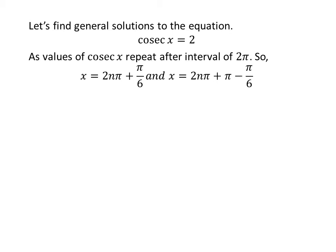Let us find the general solutions. As we know, the values of cosecant of x repeat after the interval of 2 times pi. So, the general solutions are 2 times n times pi plus pi upon 6 and 2 times n times pi plus pi minus pi upon 6, where n is an integer.